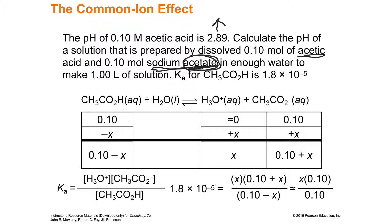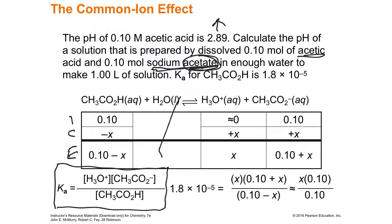We're going to use an ICE table — initial concentration, change, and equilibrium concentration for all species. Water is liquid, so it's cancelled out. The Ka expression has products on top: concentration of hydronium times concentration of acetate, all raised to the first power, divided by the concentration of acetic acid. All stoichiometric coefficients are 1.